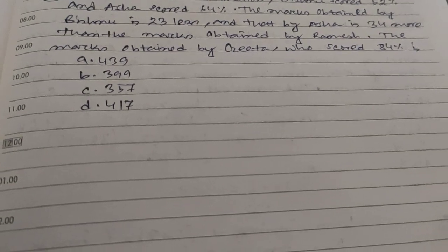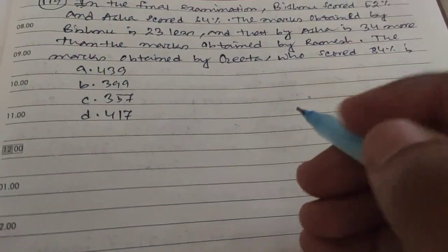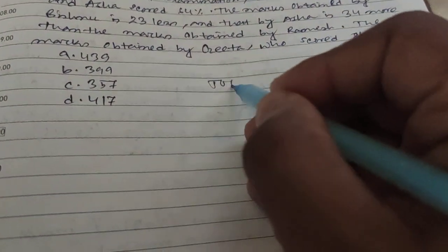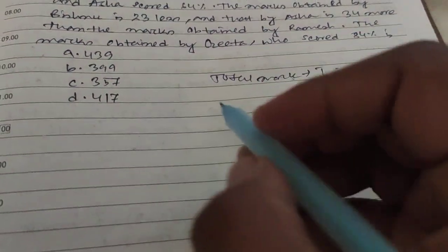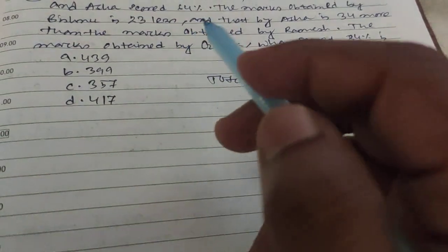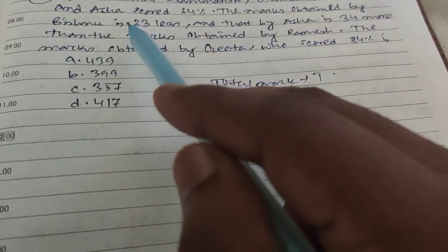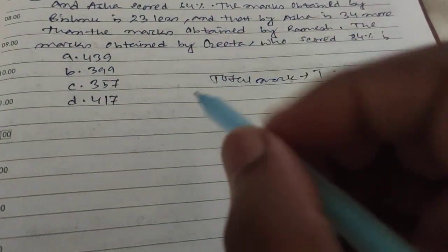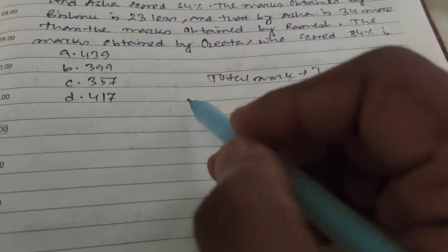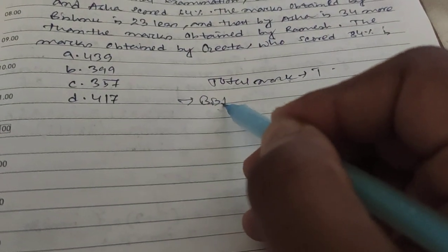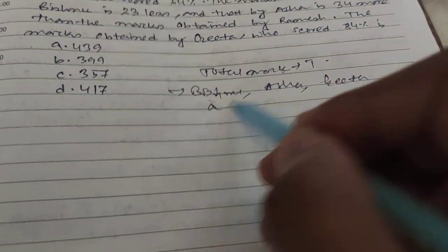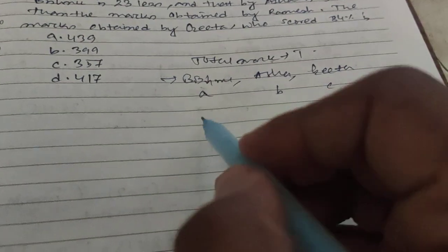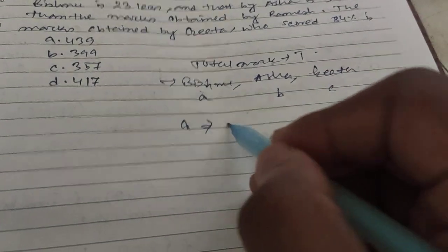So suppose total marks of the exam is T, and suppose Bishnu, Asha, and Gita their scores are A, B, and C. And A is 52 percent of T, which is C minus 23, the marks obtained by Bishnu.